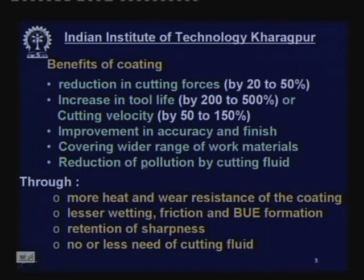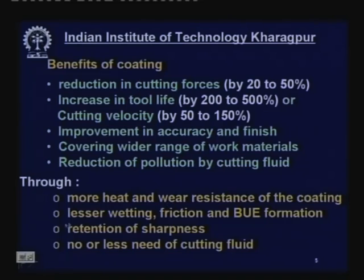Coated carbide also enables reduction in cutting fluid pollution because this coated carbide needs much less or no cutting fluid at all. These qualities are achieved through more heat and wear resistance of the coating — materials like titanium carbide and titanium nitride are more stable and wear-resistive than tungsten carbide. Lesser wetting, friction, and built-up edge formation result from the greater stability of the coating material against steel work materials, with retention of sharpness due to wear resistance.